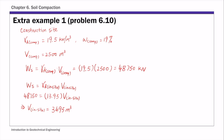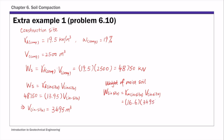That is how many cubic meters of soil you need from the excavation site to be used as compaction fill. Then the weight of the moist soil from the excavation site, W in situ, is the moist unit weight γm in situ times the volume we just calculated: 16.6 × 3,495. This gives the weight of the moist soil from the excavation site: 58,017 kN.